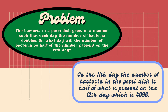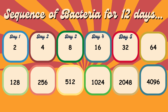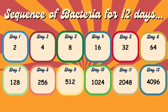Since the number of bacteria on the 12th day is 4096, one way of finding the half of it is by dividing it by two. I will show the whole process on how I got it. These are the number of bacteria from day one to 12.